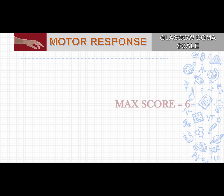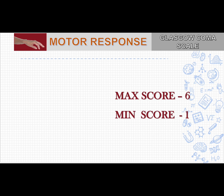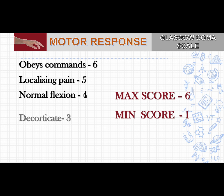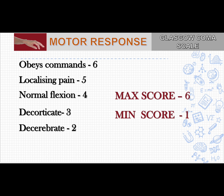The last component is motor response. The maximum score is 6 and the minimum score is 1. The scores are: obeys command is 6, localizing pain is 5, normal flexion is 4, abnormal flexion (decorticate) is 3, decerebrate (abnormal extension) is 2, and none is 1.